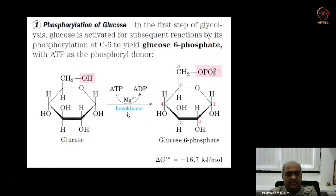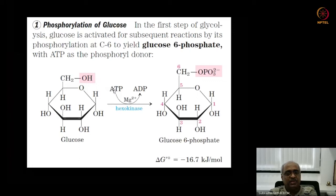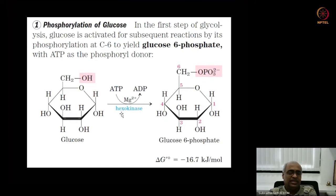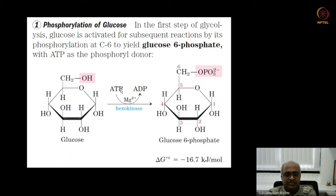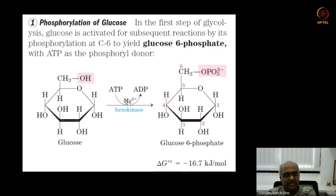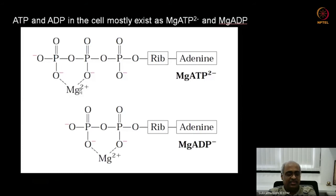This phosphorylation is catalyzed by hexokinase, a highly conserved enzyme. There is also glucokinase in the same family. An enzyme that phosphorylates a hexose like glucose is called hexokinase. The phosphoryl group transfer is from ATP — specifically, the phosphate group may be temporarily transferred to the enzyme, then ADP is released, and the phosphate is transferred to glucose.